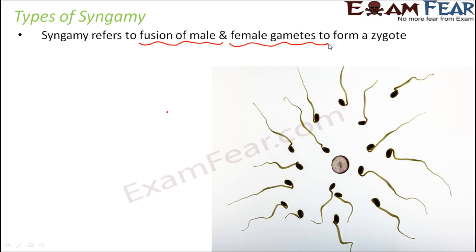Basically it is the fertilization process — like in the case of human beings, the egg and the sperm fuse together to form the single-celled zygote. The zygote then undergoes repeated mitotic division to finally form the embryo. This fusion of male and female gametes is called syngamy, which means union of two gametes.